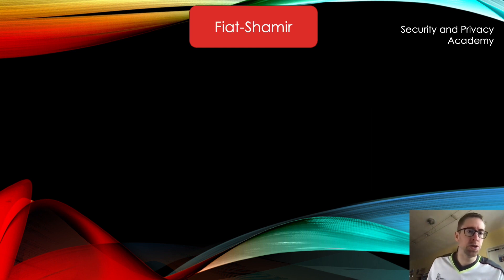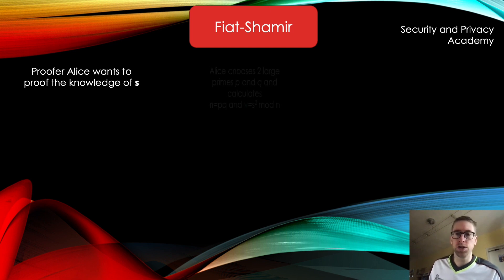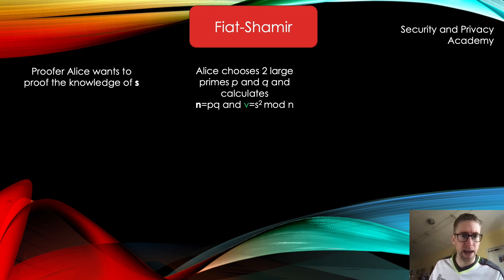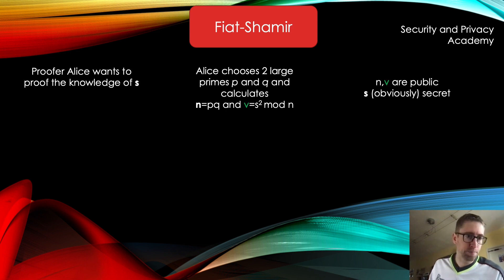Let's now talk about the Fiat-Shamir heuristic, which builds upon this concept. We again have our prover Alice, who wants to prove knowledge of some number s. To this end she chooses two large primes p and q, and calculates n as a multiple of these two numbers, and a variable v which is the secret s squared. Everything is built upon this mod n. The values n and v are public, and the secret obviously stays private.